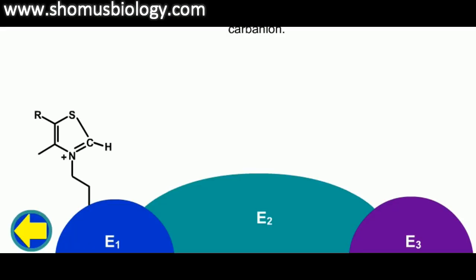Looking at the three subunits — E1, E2, and E3 — E1 is linked with modifying pyruvate and releasing carbon dioxide, which is why it is known as a decarboxylase. E1 has a bound coenzyme, thiamine pyrophosphate (TPP), which readily forms a strongly nucleophilic carbanion. This carbanion performs a nucleophilic attack on the carbonyl carbon of pyruvate, releasing one carbon dioxide molecule, and the remaining carbons link to the TPP carbon.